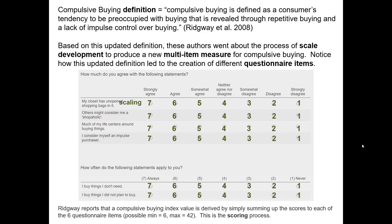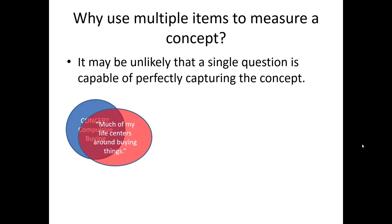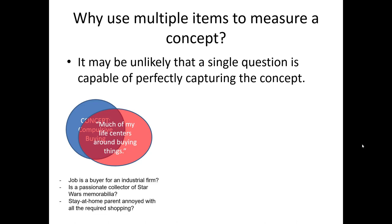For example, the first question is 'My closet has unopened shopping bags in it' — if you strongly agree, you score a seven. Ridgeway's scoring process was much simpler than Faber and O'Quinn's: simply sum up the scores across all six questions. If someone strongly disagreed on all six, they'd score a minimum of six. If someone strongly agreed on all six, they'd receive a maximum score of 42, the highest possible compulsive buying score.